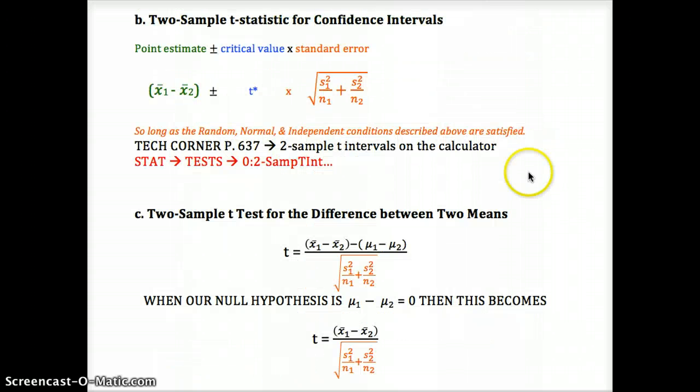To form a confidence interval, we would take the difference in the two averages. We'd subtract, plus or minus our critical value. Remember ZapTax, Z for a proportion, T for a sample mean. The only time we can use Z for a sample mean is if we know the true population standard deviation. And then we multiply that by the standard error, which we added the variances of each data set and square rooted. Notice we're not using pooling. There's no pooling here for sample means. Just know that we're not going to use that.